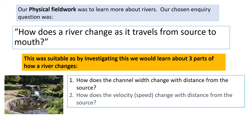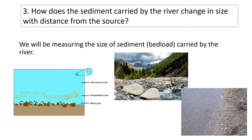This was a suitable question because by investigating it we would learn more about three aspects of how a river changes. The three sub-questions we were going to look at were: one, how does the channel width change? Two, how does the velocity of the river change? And thirdly, how does the sediment size change as you move with distance from the source?